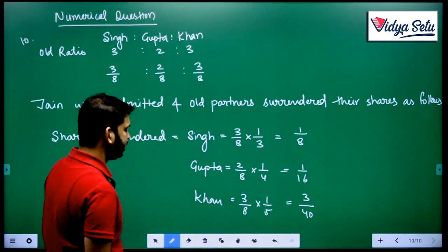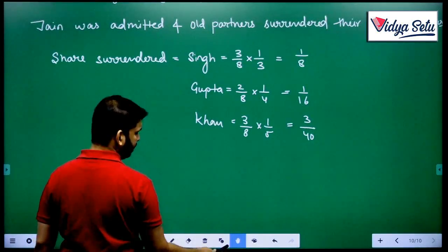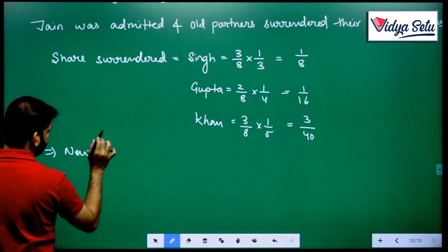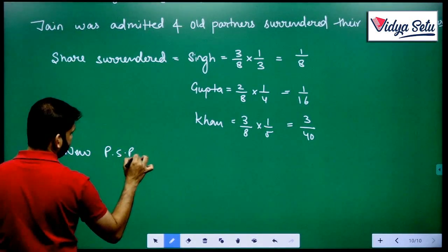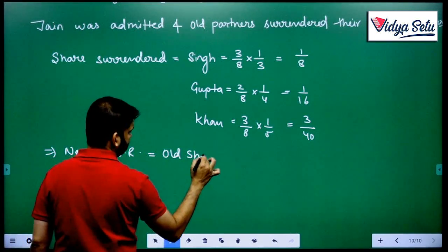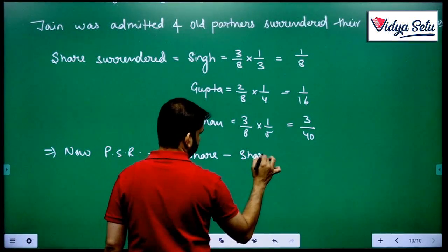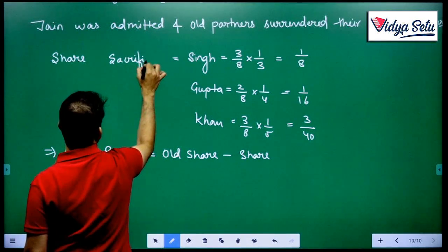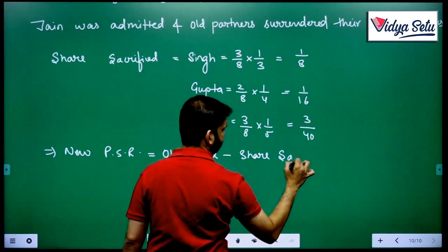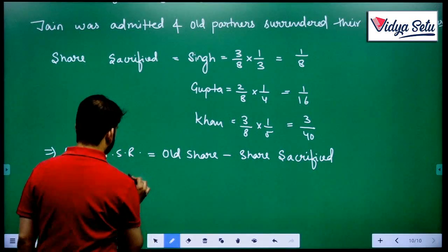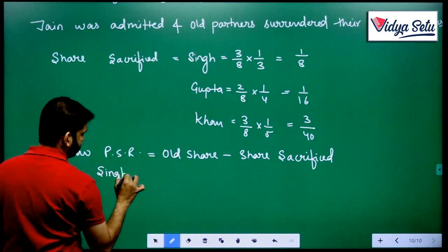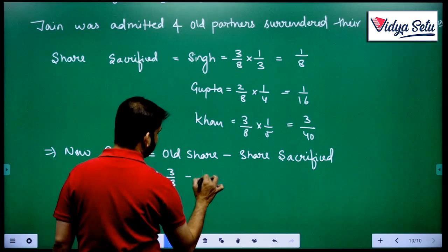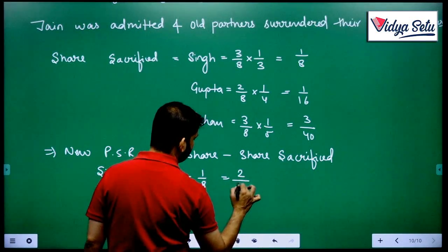Whatever is their sacrifice will be gained by Jain. New profit sharing ratio equals old share minus share sacrificed. For Singh, his share was 3 by 8, he is sacrificing 1 by 8 out of it, so he is remaining with 2 by 8.